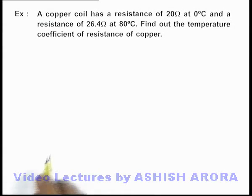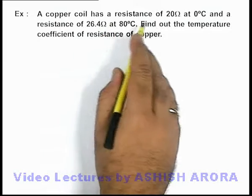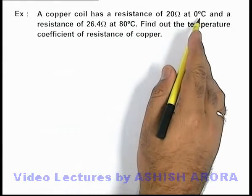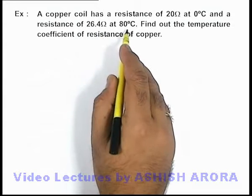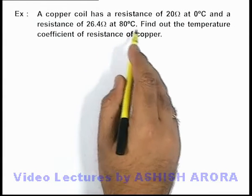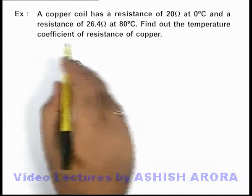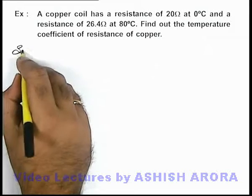In this example, we are given that a copper coil has a resistance of 20 ohm at zero degree centigrade and a resistance of 26.4 ohm at 80 degree centigrade, and we are required to find out the temperature coefficient of resistance of copper.